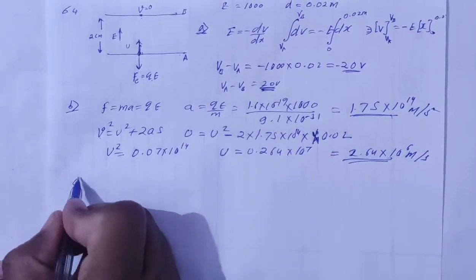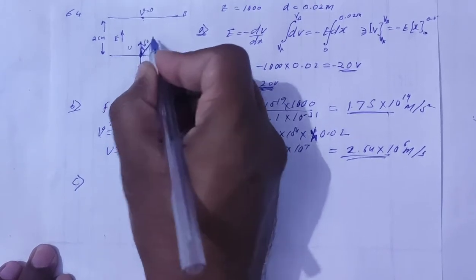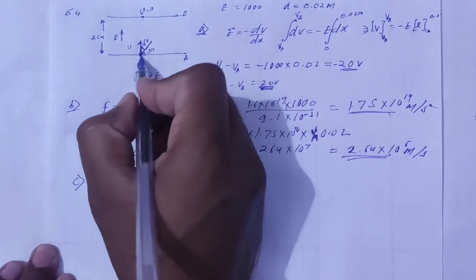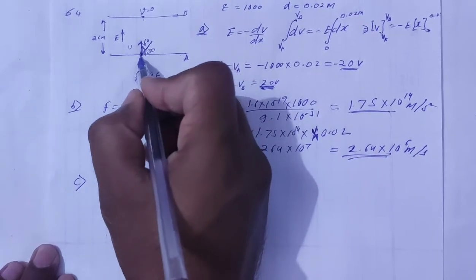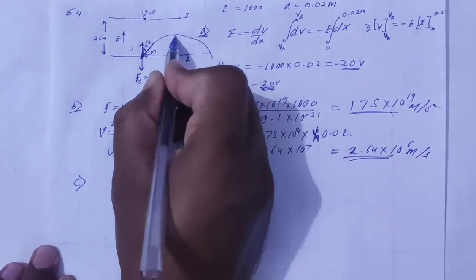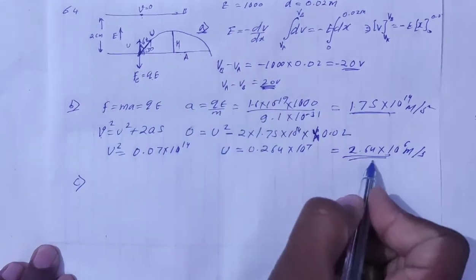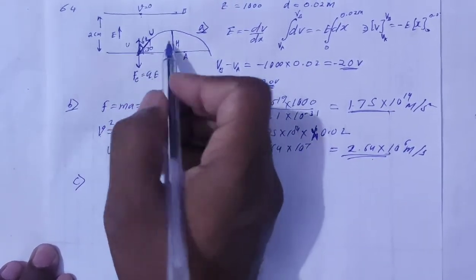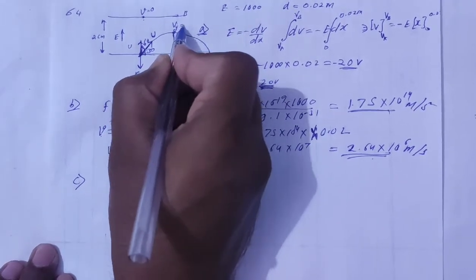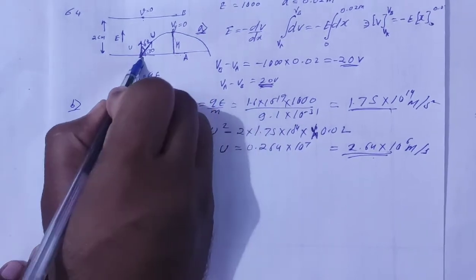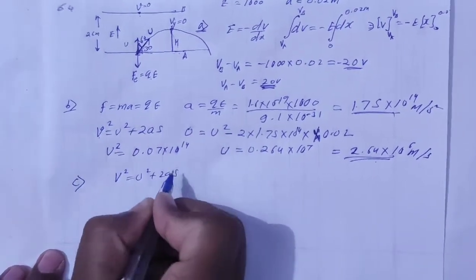Now for part C, finding the maximum height. This is a projectile question — like projectile motion under gravity but here driven by the electric force. The electron is projected with speed u at 60 degrees from the field direction, meaning 30 degrees from horizontal. We need to find the maximum height H. At maximum height, vertical speed becomes zero, so we apply Newton's third equation of motion in the vertical direction.